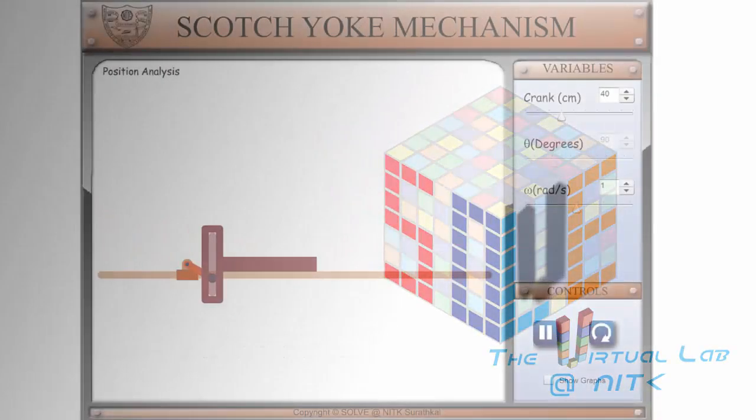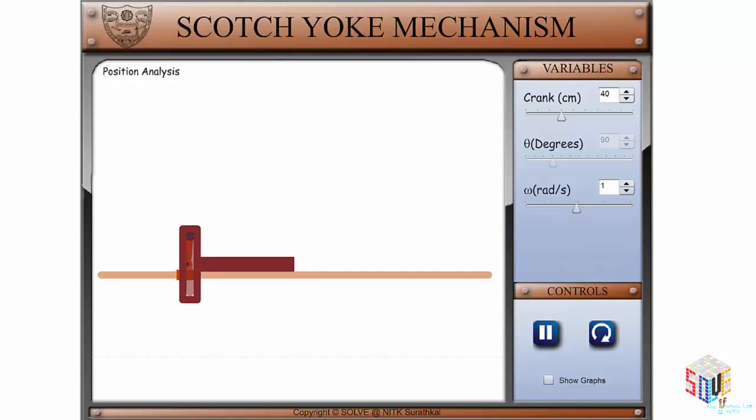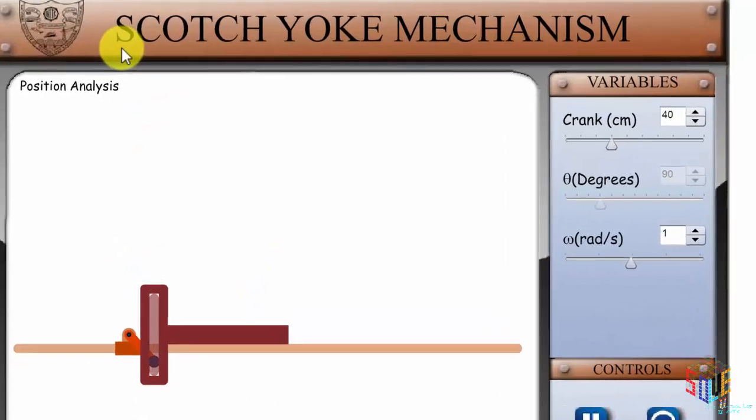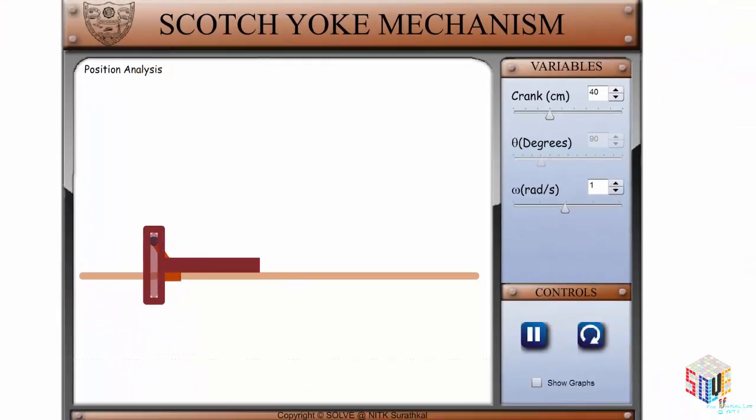Welcome to Solve, the virtual lab at NITK. In this short tutorial, I'll explain how to use this interface to do the position analysis of Scotch-Yoke mechanism to determine the position of the oscillating slider given the position and orientation of the crank and link length.